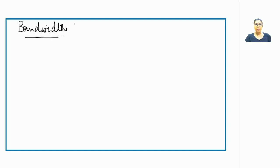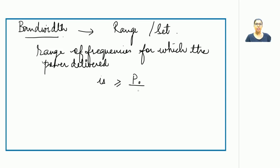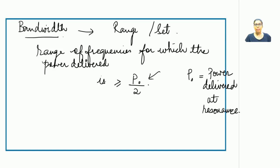A very important term in series resonance is bandwidth. Bandwidth is a range of frequencies for which the power delivered is greater than or equal to P₀/2, where P₀ is the power delivered to the circuit at resonance.